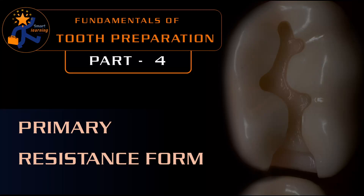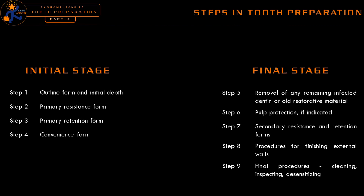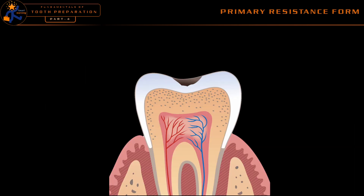I am Dr. Benin and welcome back to the fourth part of the presentation on fundamentals of tooth preparation. In this part, we are going to see about the primary resistance form in detail. As we all know, tooth preparation can be divided into two stages: the initial stage and the final stage. Primary resistance form is the second step in the initial stage of tooth preparation.